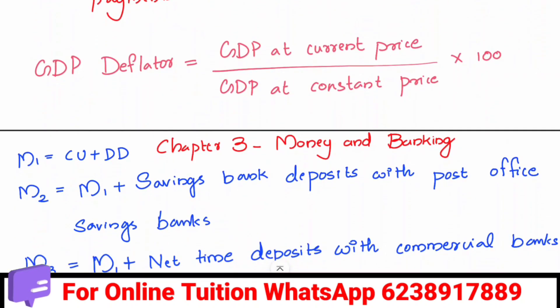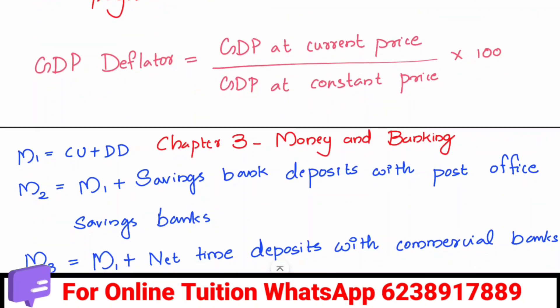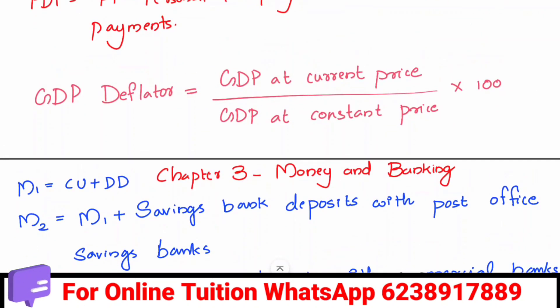The GDP deflator is current price GDP divided by constant price GDP, multiplied by 100.